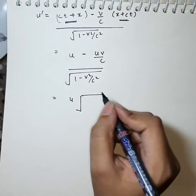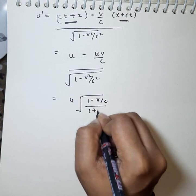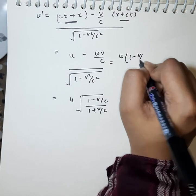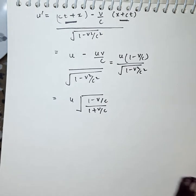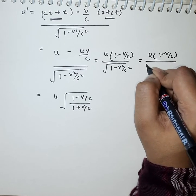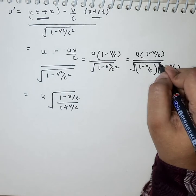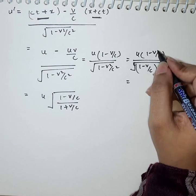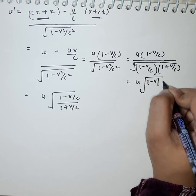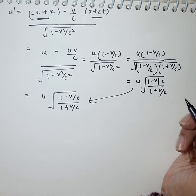Taking u as common and rationalizing: u times the square root of 1 minus v by c upon 1 plus v by c. This is the calculation. This is 1 minus v by c under root 1 minus v square by c square, and we will calculate it so you will know which option is correct.